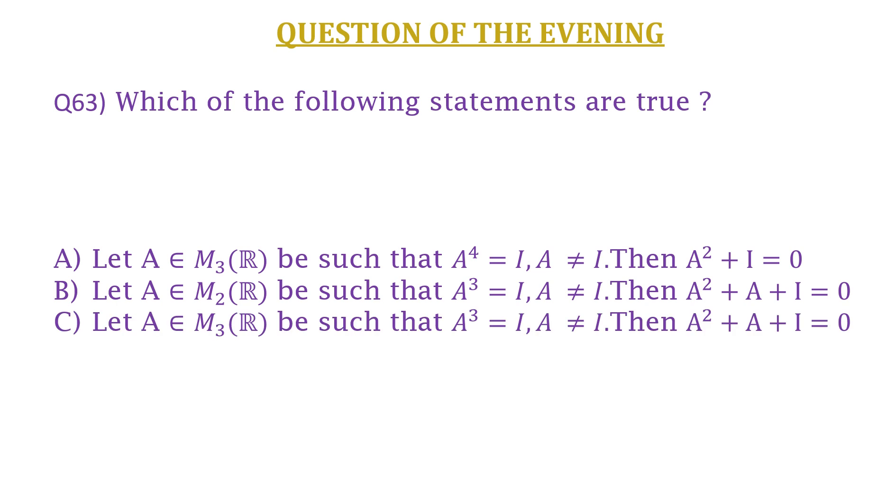C, let A belongs to M₃(ℝ) be such that A³ = I and A is not equal to the identity matrix, then A² + A + I = 0. And D, none of them.